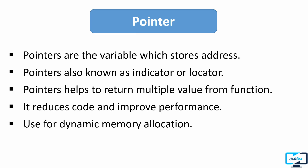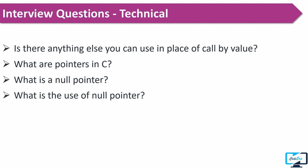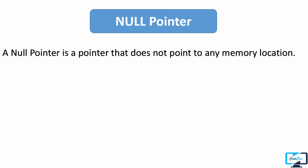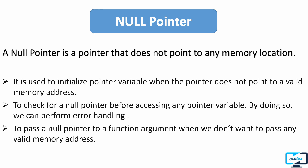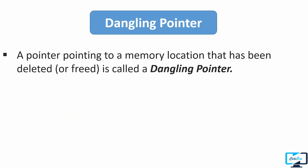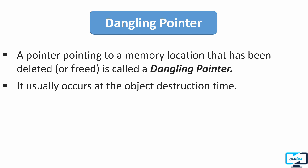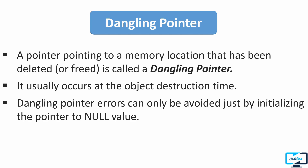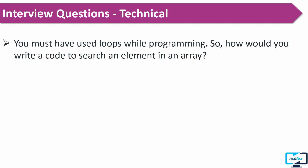The next question was what is a null pointer and what is its use. A null pointer is a pointer that does not point to any memory location. After that, the interviewer asked what is a dangling pointer. A dangling pointer is a pointer pointing to a memory location that has been deleted or freed, and it usually occurs at the time of object destruction. We can avoid dangling pointer errors by initializing the pointer to a null value. If you choose C language, prepare all types of pointers well, as it is one of the most important topics.